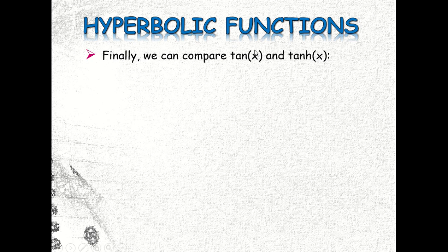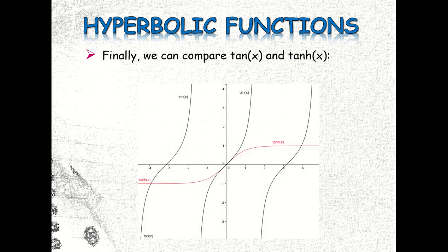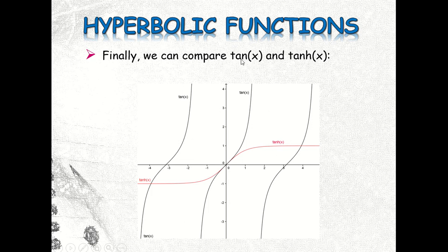Finally, we can compare tan(x) and the hyperbolic tangent from this illustration. The tangent graph looks like a standing wave, while the hyperbolic tangent looks similar but with a different orientation. At least you are familiar with these graphs, so when asked to graph the hyperbolic and tangent functions, you have an idea of their curves.